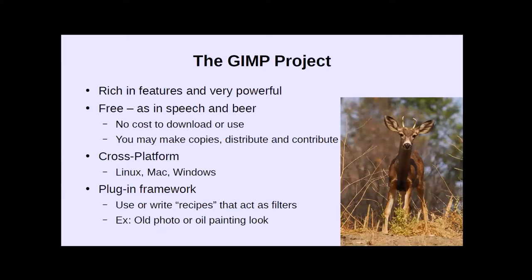The GIMP uses a plug-in framework. There are many different granular features that can be used in a scripting format and, when combined, create an effect. For example, if you're using a smartphone photo app, you'll have filters — warm, cool, sunny day, HDR, something like that. You have that same capability within the GIMP. There are pre-programmed filters out there, or you can make your own. One I've used many times is just the old photo look — you click one button and it gives you sepia tones, a crinkly sort of look, even torn edges.